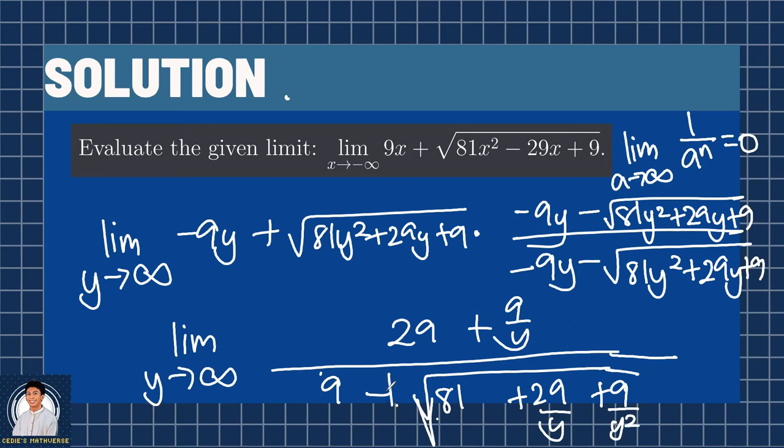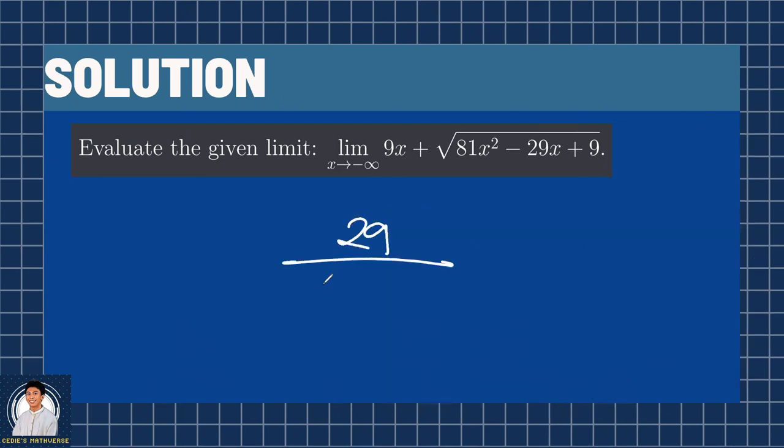Using the limits to infinity, we have 29 plus 0. Since the limit is 0, remember that these 2 are also 0. So we have 9 plus square root of 81 plus 0 plus 0, which is 81 still. And our final answer will be 29 over 9 plus square root of 81, which is equal to 29 over 18.